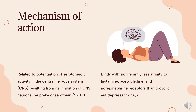Mechanism of Action. Escitalopram, like other selective serotonin reuptake inhibitors, enhances serotonergic activity by binding to the orthosteric (i.e., primary) binding site on the serotonin transporter (SERT) — the same site to which endogenous 5-HT binds — and thus prevents the reuptake of serotonin into the presynaptic neuron.